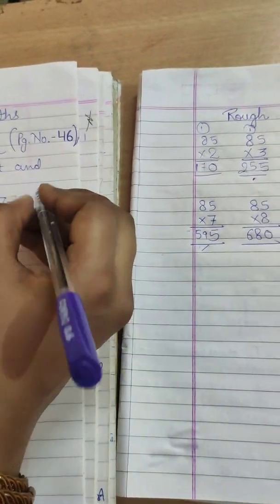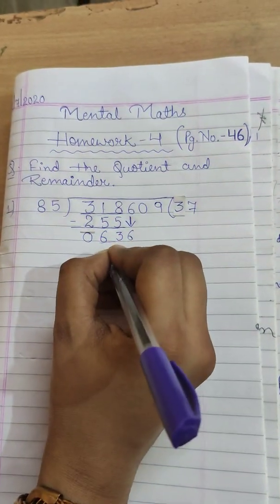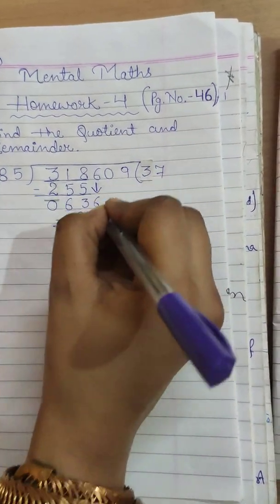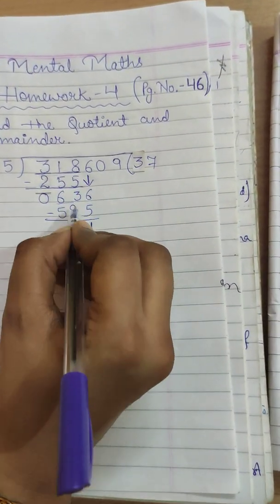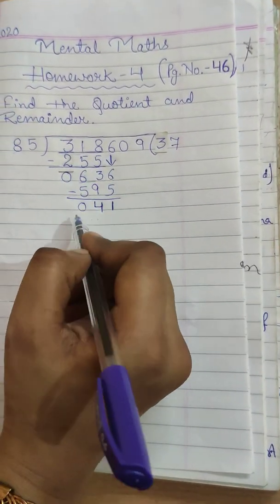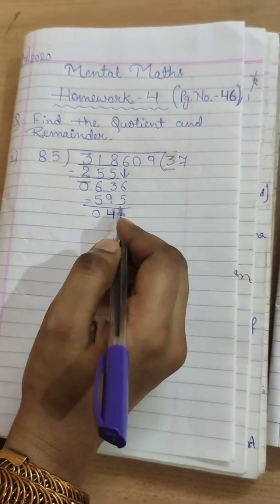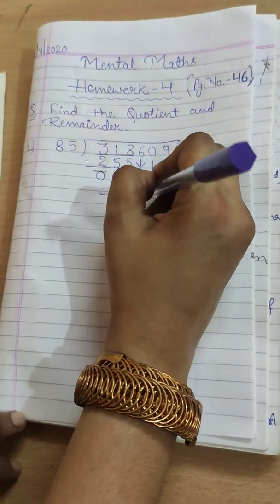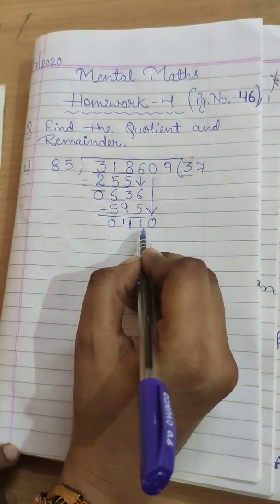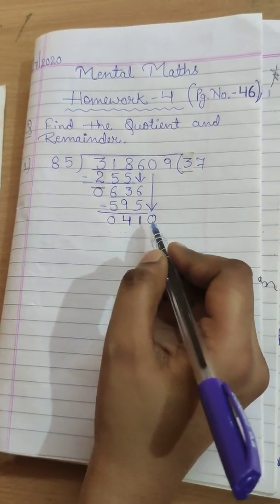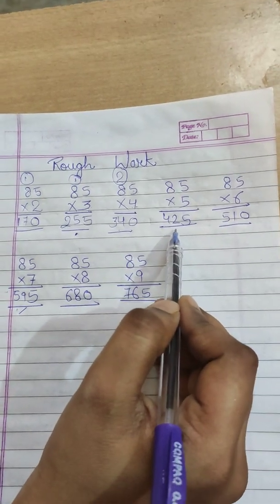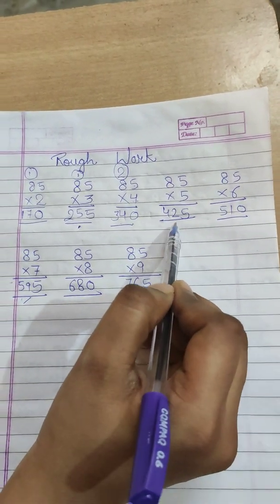We will carry the next digit, 6. 636. So let's check, is it coming or not? 636 is not coming, so we will take 85 sevens are, 595. So we will subtract it. 6 minus 5 is 1, 13 minus 9 will be 4, and here 0. 5 minus 5, 0. We will solve it after taking borrow.